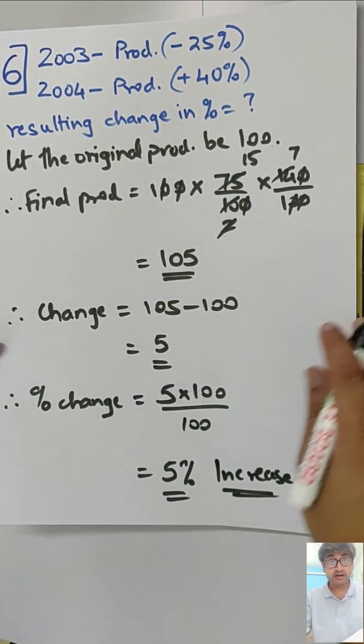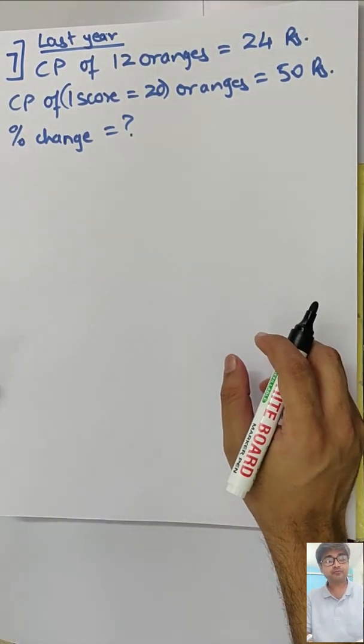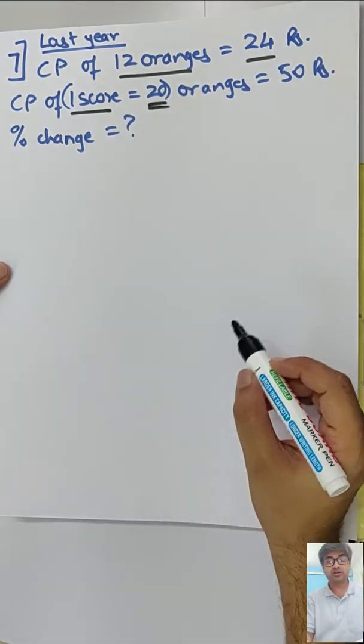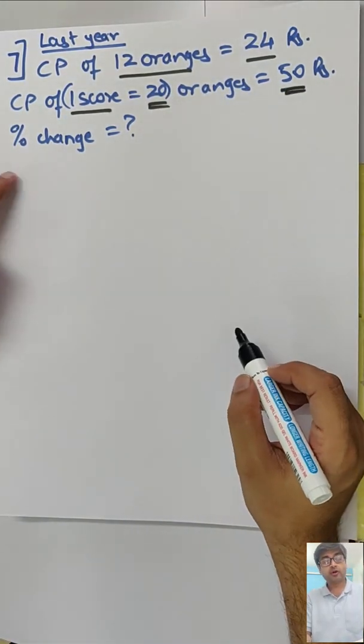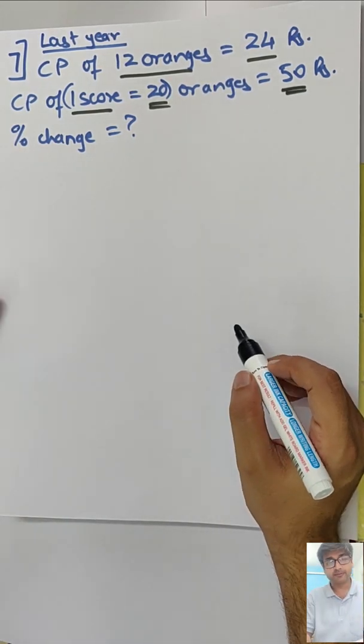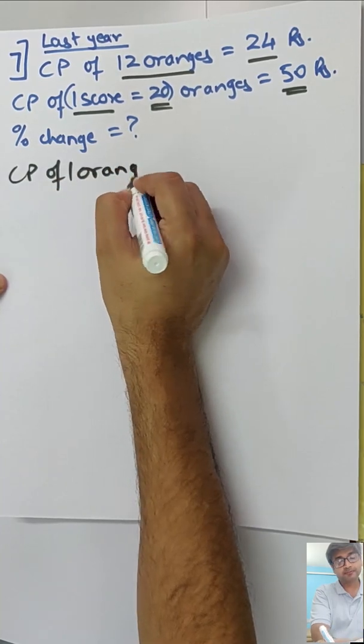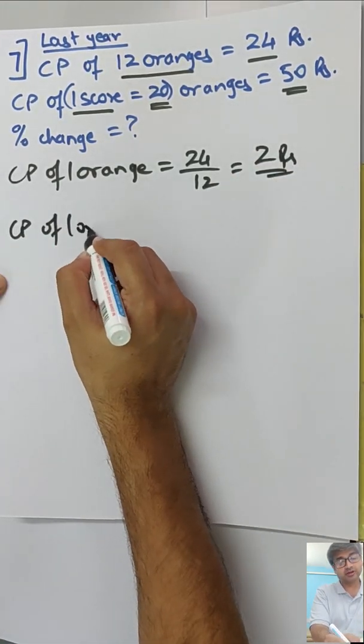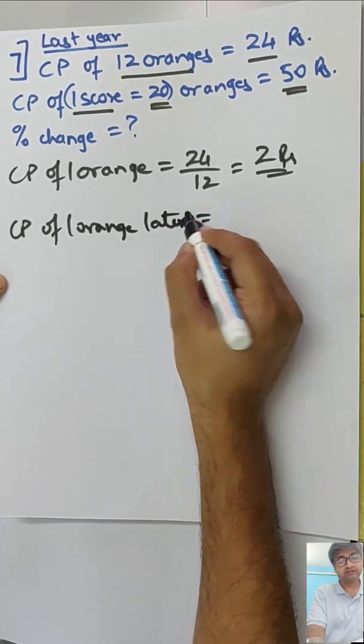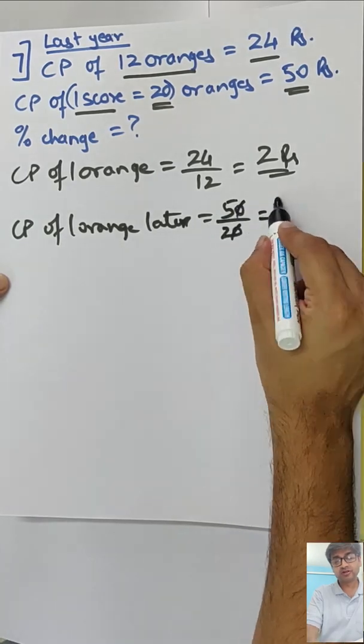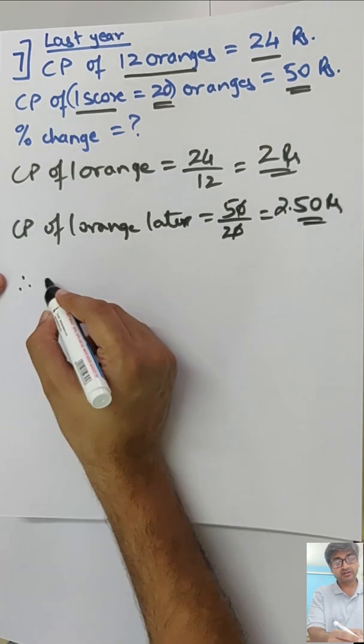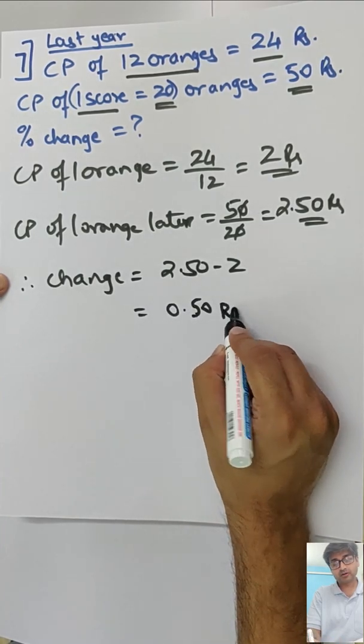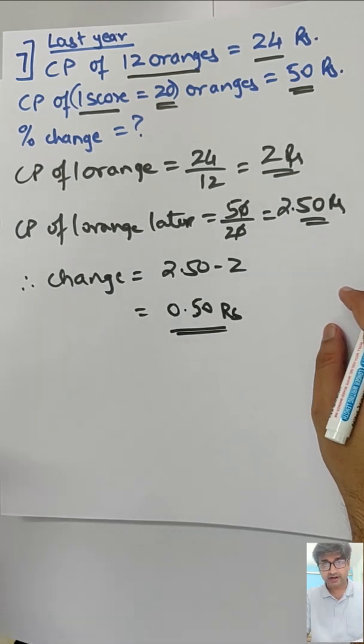Let's go to the next one, sum number 7. Cost price of 12 oranges is 24 rupees, and then later one score is 20, so 20 oranges cost us 50 rupees. What is the percent change? The easiest method is consider one orange at a time. CP of one orange for this case, 24 divided by 12, 2 rupees. And later on, CP of one orange, 50 rupees for 20 oranges, so one orange is 2.50 rupees.